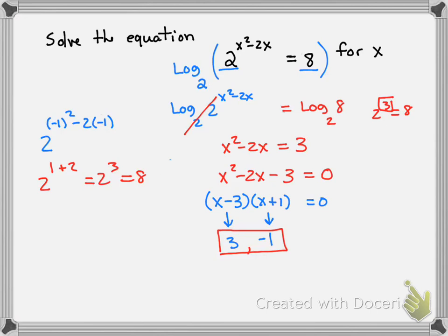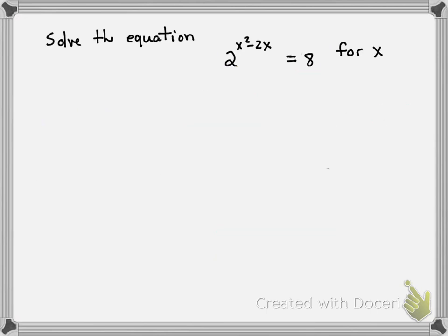Another way to do this problem that might be simpler for some is to think of 8 as 2 to the 3rd power. I chose 2 as the base because that's the base here. So if I have 2 to the x squared minus 2x equals 2 to the 3rd, since my bases are the same, I can set my exponents equal. And it's just a faster way to get to the same place.